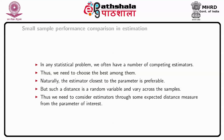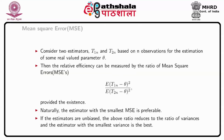In statistical point estimation, we compare two estimators through some expected distance measure from the parameter of interest. For example, suppose we have two estimators T1n and T2n, both based on n observations for the estimation of some real-valued parameter theta. Then the relative efficiency can be measured by the ratio of mean square errors: expected value of (T1n minus theta) squared divided by expected value of (T2n minus theta) squared, provided the expectation exists. Naturally, the estimator with smallest MSE is preferable.